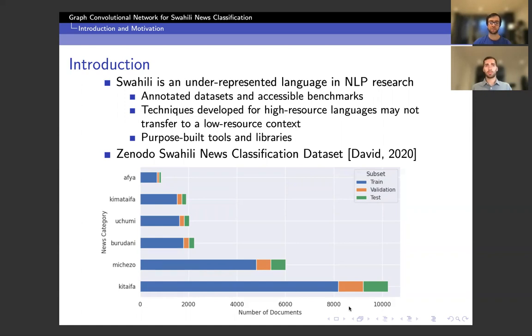Furthermore, techniques are often developed in high resource languages in publications and there remains a degree of uncertainty as to how well these transfer into a low resource context. And finally, the lack of purpose-built tools and libraries for these languages often results in making the work more difficult to get done.